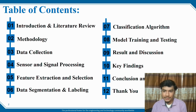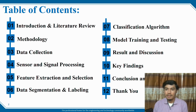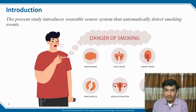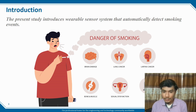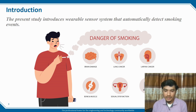The World Health Organization states that annually 8 million people are affected by daily life smoking events — 7 million are directly affected and 1 million are affected by secondary life smoking events. It is very dangerous and harmful, causing brain damage, lung cancer, brain cancer, bone and muscle dysfunction, and sexual dysfunction.